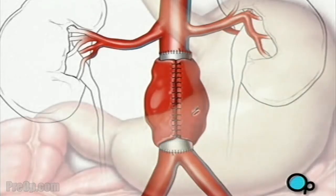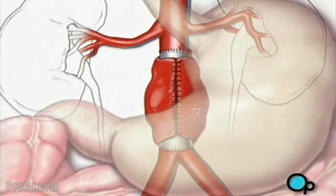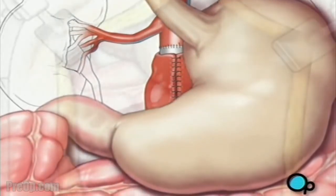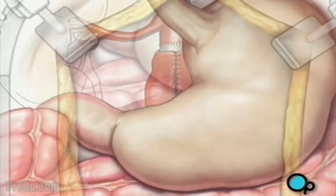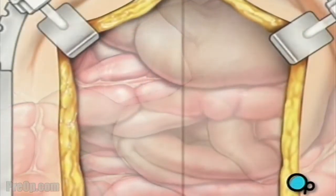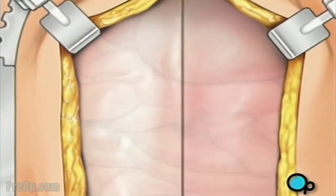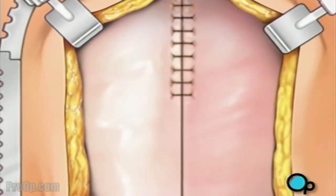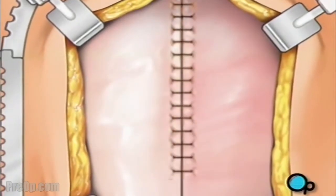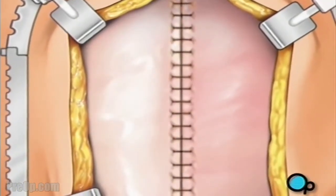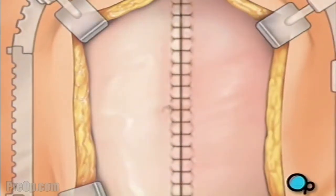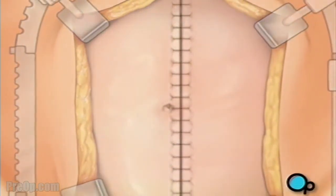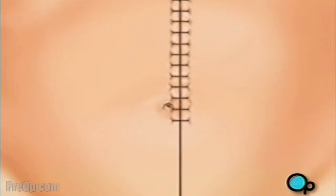Your doctor will restore all internal organs to their proper positions. The muscles and other tissue can then be closed with sutures. Finally, the skin is closed with staples and a sterile dressing is applied.